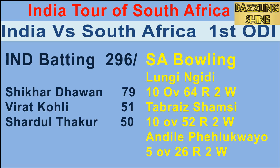Fifth ball of the ninth over, Mokaram to Kohli — short ball and Kohli plays it nicely towards the square leg boundary for four runs. First ball of the tenth over, Maharaj to Dhawan — going down the leg side, Dhawan helps it and slaps it to the boundary for four runs.